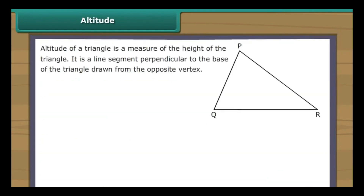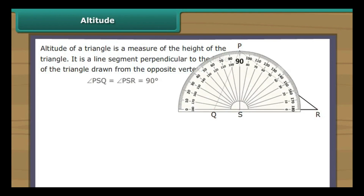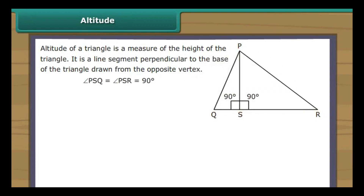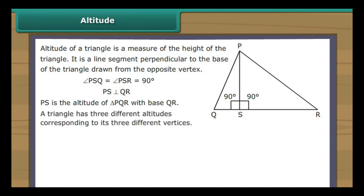The altitude of a triangle is a measure of the height of the triangle. It is a line segment perpendicular to the base of the triangle drawn from the opposite vertex. Line segment PS is a perpendicular drawn from vertex P to the base QR; it intersects QR at right angles. Therefore, PS is the altitude of triangle PQR with base QR.